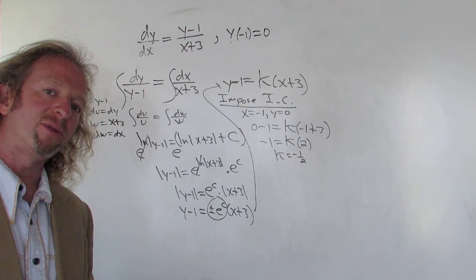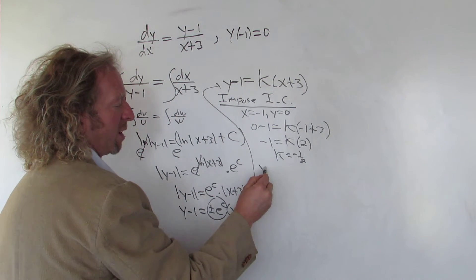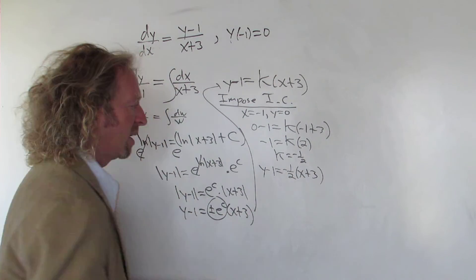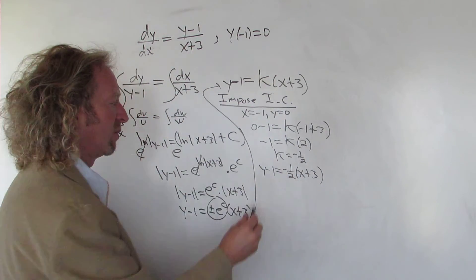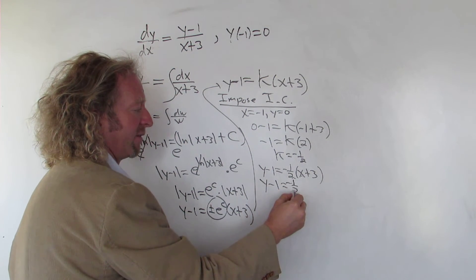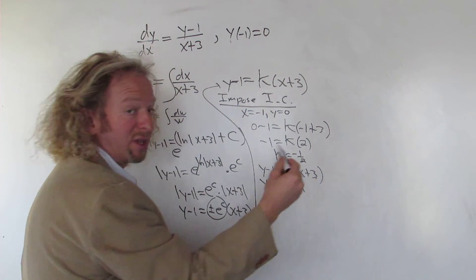The last thing to do is plug k back in and solve for y. So we have y minus one equals negative one half times x plus three. Now we'll distribute the negative one half. Negative one half times x is negative one half x. Negative one half times three is negative three halves.